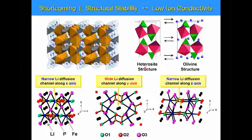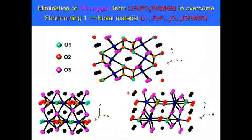Let's think about shortcomings number one and number two. Considering the crystal structure of LFP, Li-ions are difficult to move, especially along the X-axis and Z-axis. The important bonding site for Li-ions in the crystal is oxygen atoms. So if we somehow reduce the amount of oxygen in the unit crystal, enough space for the Li-ion pathway can be formed in the crystal. This is the reason why we call this strategy non-stoichiometry lithium iron phosphate.